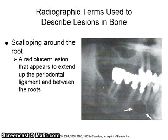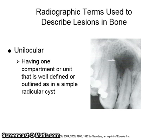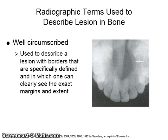A unilocular lesion has one compartment or unit that is well-defined or outlined, as in a simple radicular cyst. The term well-circumscribed is used to describe a lesion with borders that are specifically defined and in which one can clearly see the exact margins and extent of the lesion.